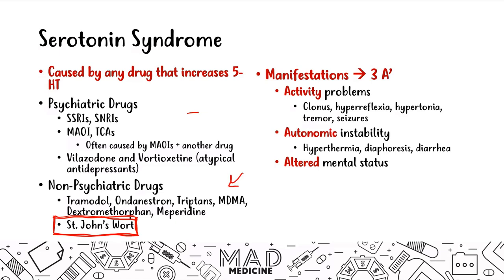At the USMLE Step 1 level, they'll typically present a patient with a history of depression taking first-line medication — that should clue you in to SSRIs or SNRIs — who also ends up taking other medications, and presents with activity problems, autonomic problems, and altered mental status. When you ask what medications they've been taking, they'll say SSRIs, SNRIs, and St. John's Wort — that clues you in to serotonin syndrome.